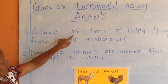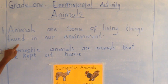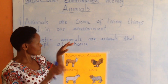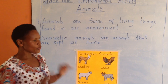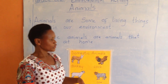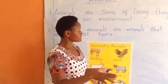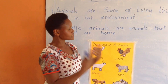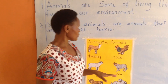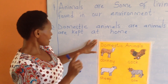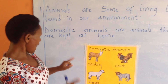Animals are some of the living things found in our environment. I know even when you are at home, if you go outside your home environment, you can see some of the immediate animals. Today, we want to look at the domestic animals.